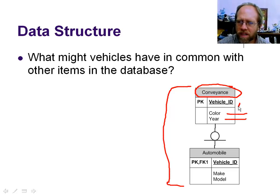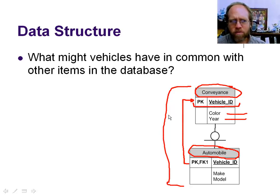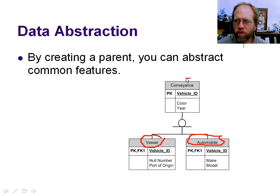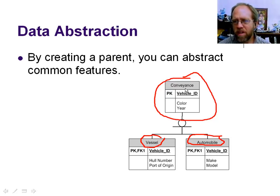Notice that the primary key is the vehicle ID. We can also create a related table that contains information specific to automobiles. The primary key of this table is also vehicle ID, and it is a foreign key back to the conveyance table. This allows us to abstract things out. If our database was only going to deal with automobiles, there would be no reason to do this. However, our database may be more complex — suppose we have boats and automobiles, both of which are conveyances. You might need to have people owning conveyances, so you have owners of conveyances.